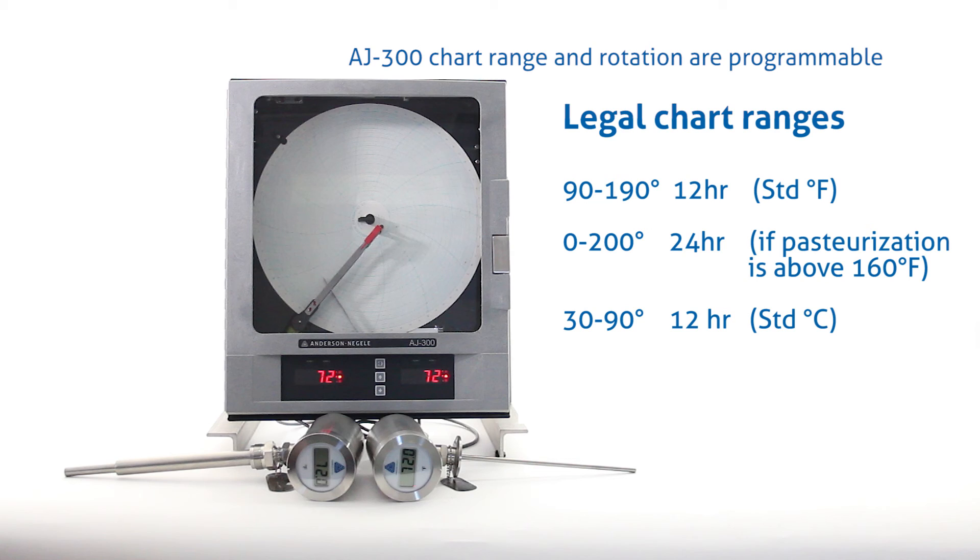There are three charts that are used. There is a 90 to 190 degree, 12 hour Fahrenheit chart. That is the standard Fahrenheit range, and that chart will have one degree per division.